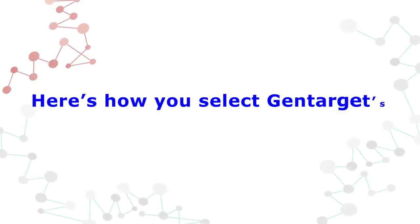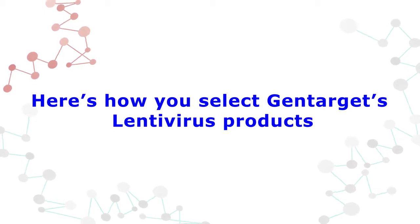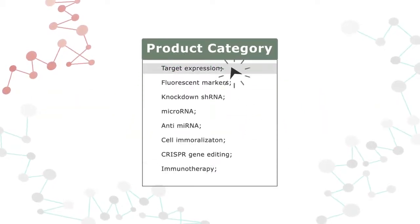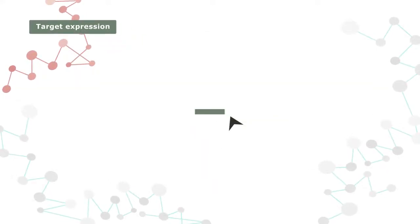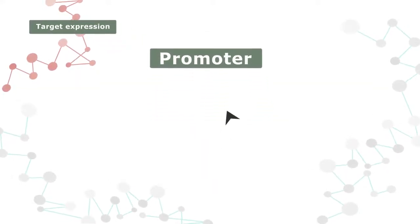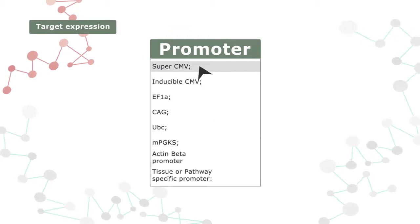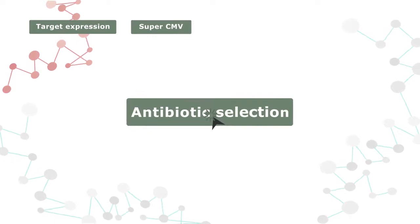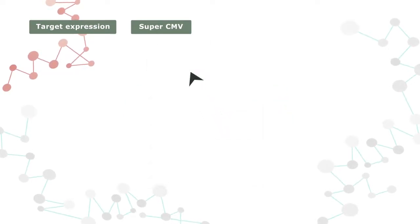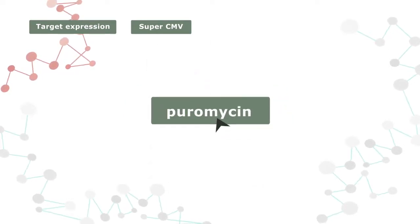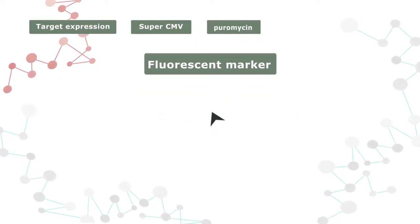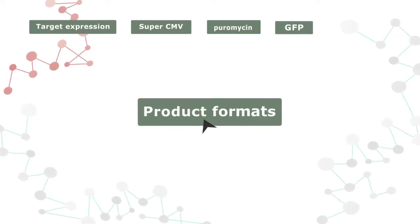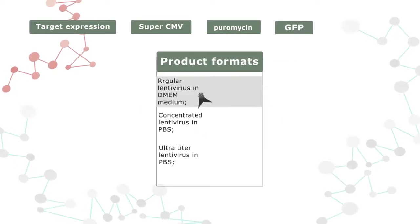Here's how you select GenTarget's lentivirus products. First select a product category. Then select a promoter based on your assay cell type. Next select the antibiotic you need. Then select a fluorescent internal marker if desired. And finally select the product format. It's that simple.